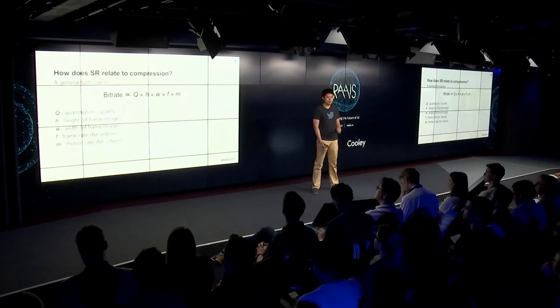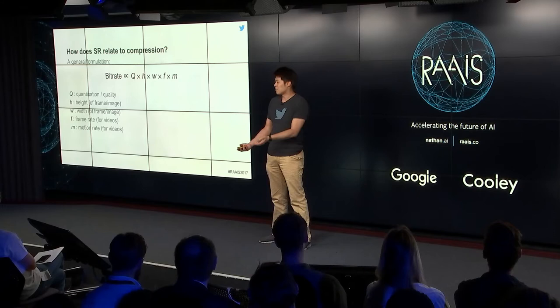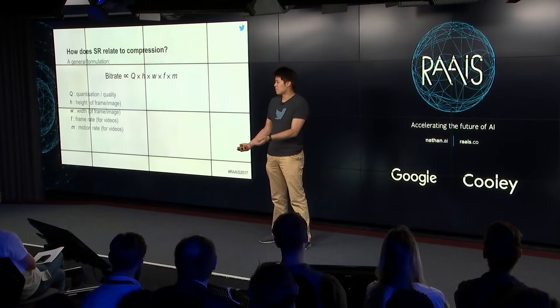So how does super resolution relate to video compression? Compression comes down to a few factors: quantization (how much data you throw away), height and width (the resolution), frame rate, and motion rate. If we can reduce the height and width of the video, we reduce the bit rate — achieving compression without touching the codec. That's the founding idea for why we want to use a super resolution algorithm for this purpose.